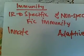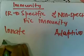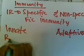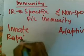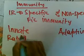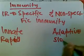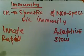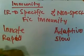Innate immunity is more rapid — it only takes a few minutes to an hour. Adaptive immunity is slow because it takes a few days to a week.